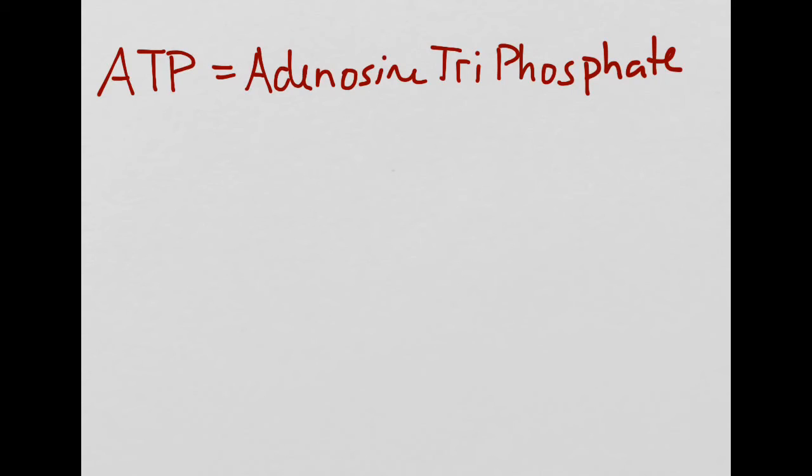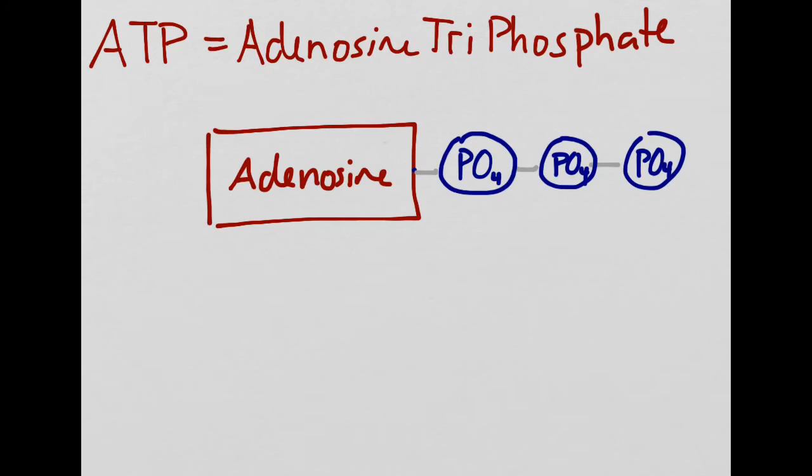ATP stands for adenosine triphosphate. Here's a simplified version of what ATP looks like. It has an adenosine group right here, and then it has three phosphate groups that are all attached to the end together. The molecule in this form has a lot of potential energy stored in the bonds between the phosphates.